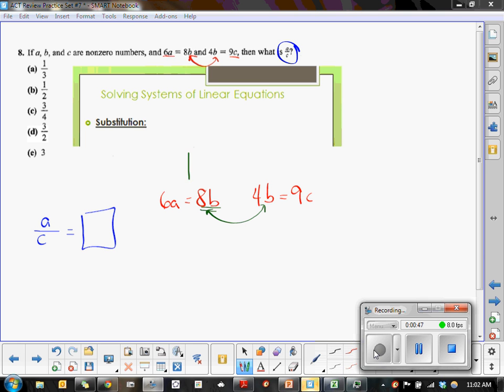So I'm going to take this equation here and divide the whole thing by 2. Divide by 2, divide by 2. So I've got 3A's that are equal to 4B's.